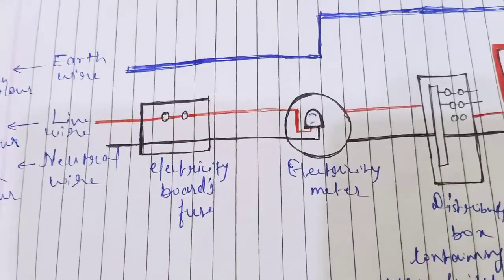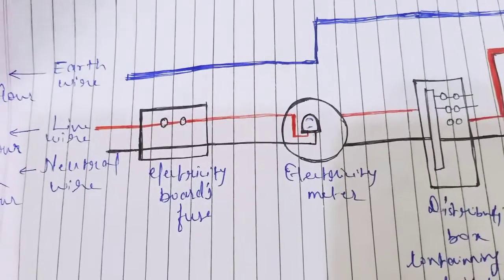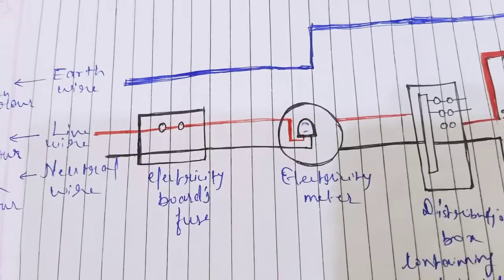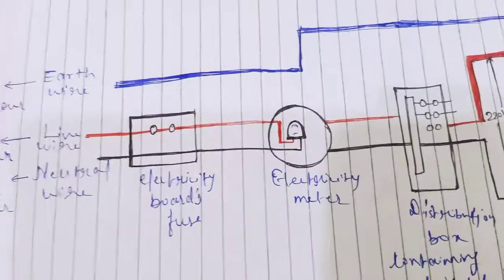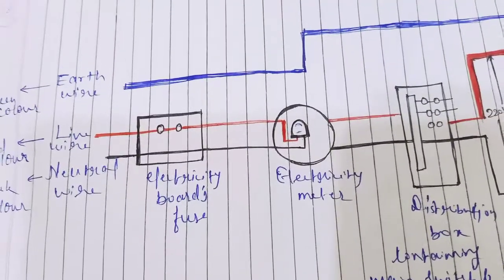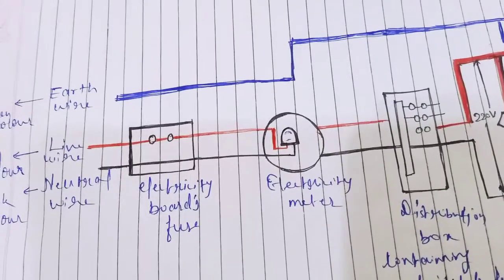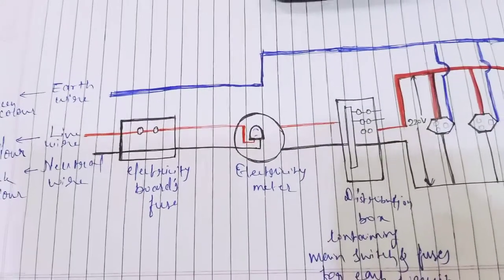What is the cause of short circuit? You can write two causes. First is when we use many appliances in a single circuit, and second cause is when live wire and neutral wire come in contact. These are the two causes of short circuit, so you have to write these points.